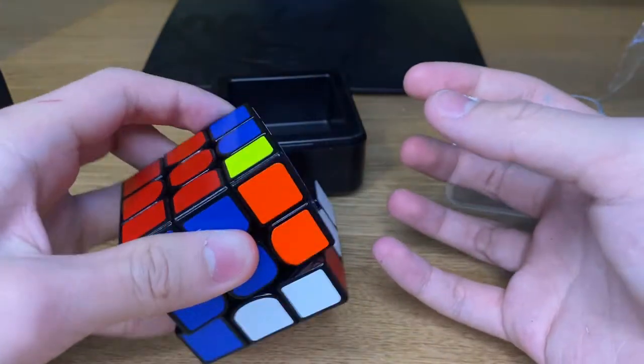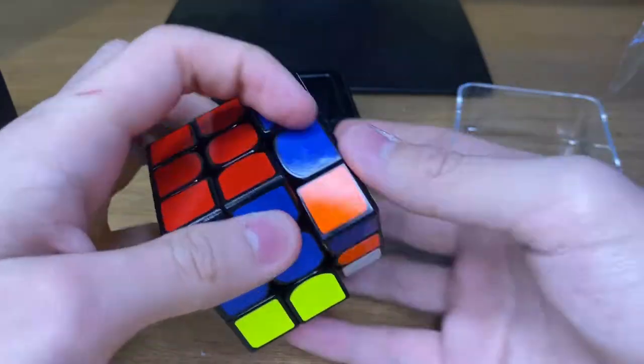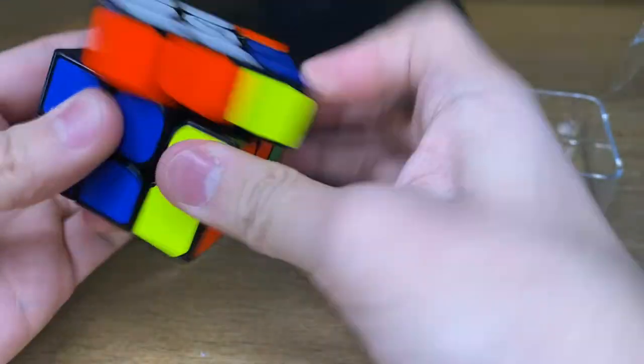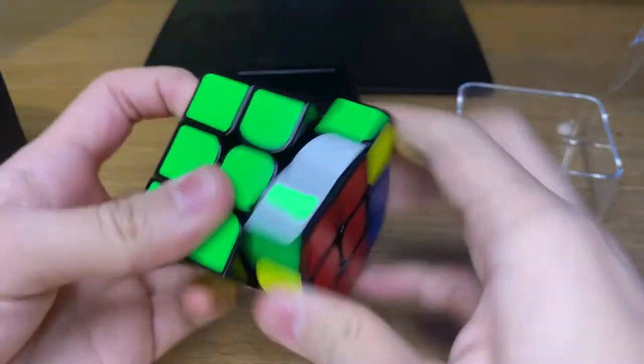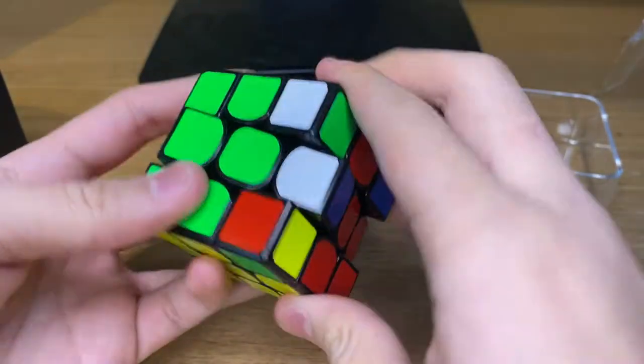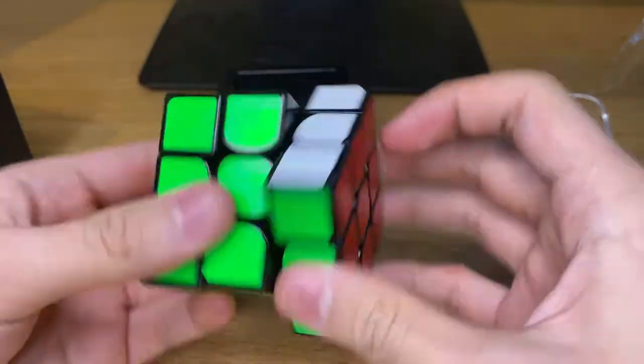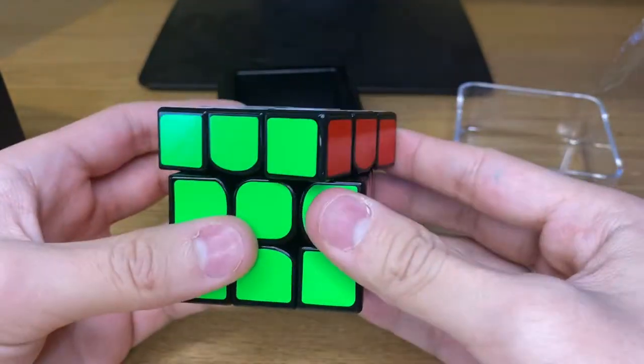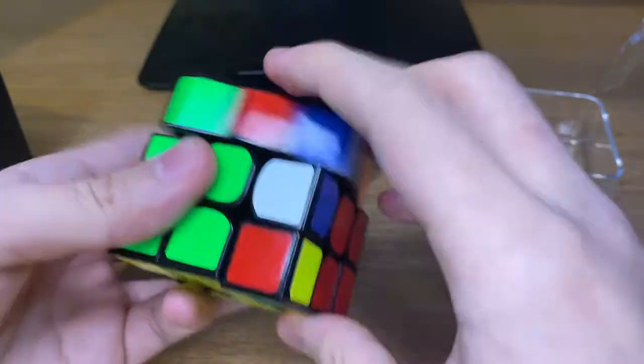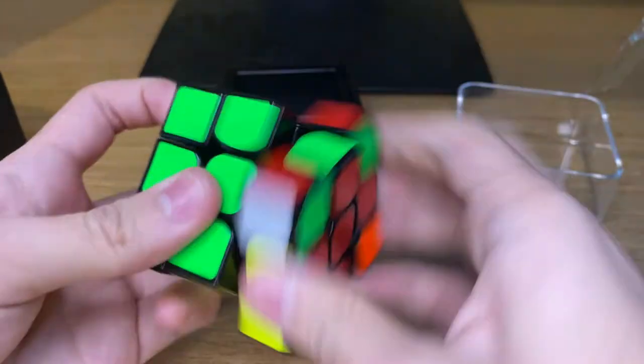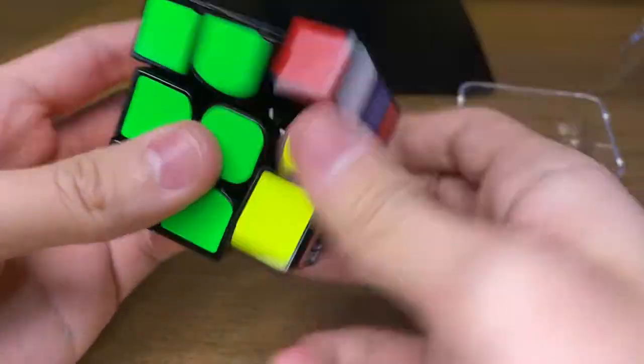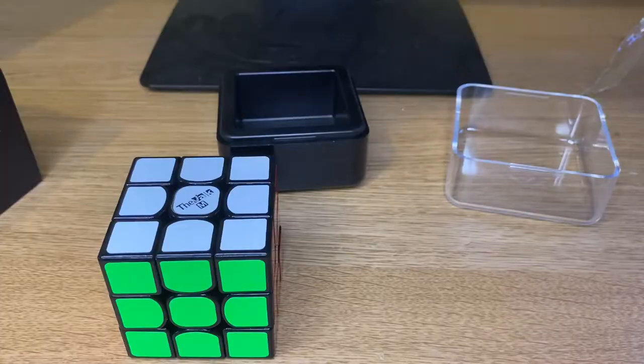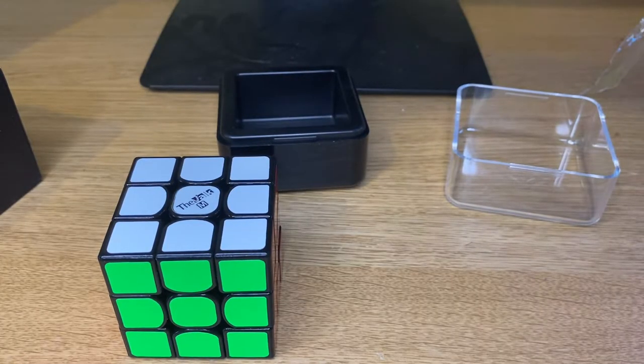But this is really good. I might use this for my one-handed. We have to loosen it a bit. Okay, so I just tensioned this cube and it's way better now. Yeah, still a bit more catches but it is way better now. It's more loose. I like it loose but this is really good. However, this might be a bit of a loud cube though, so if you have parents that don't want you to be that loud, don't get this cube I guess.